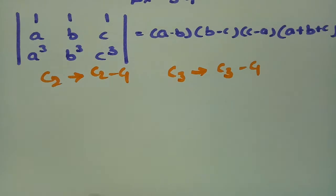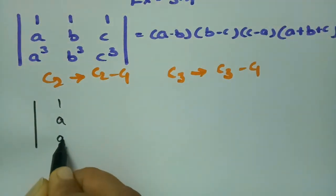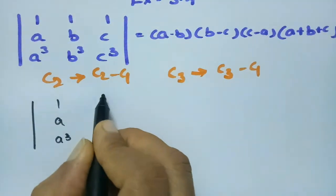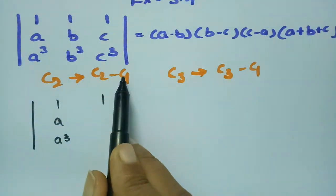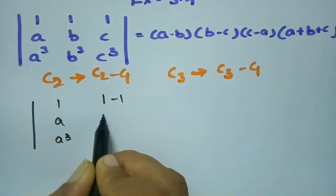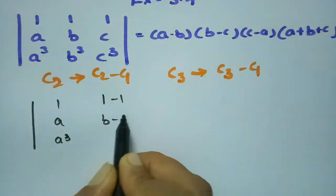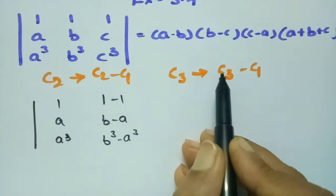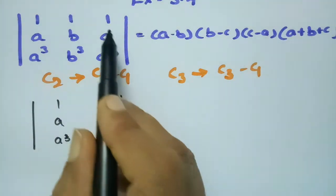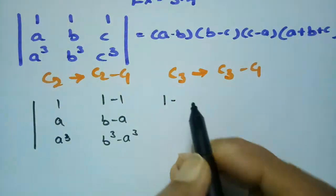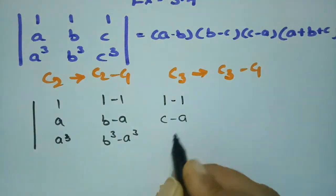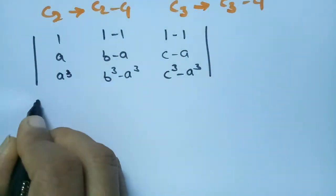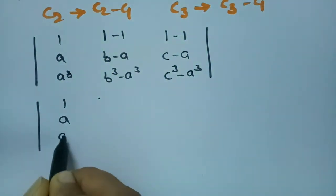After the column operation, column 1 remains as 1, a, a³. Column 2 becomes column 2 minus column 1: so 1−1=0, b−a, and b³−a³. Column 3 becomes column 3 minus column 1: so 1−1=0, c−a, and c³−a³.